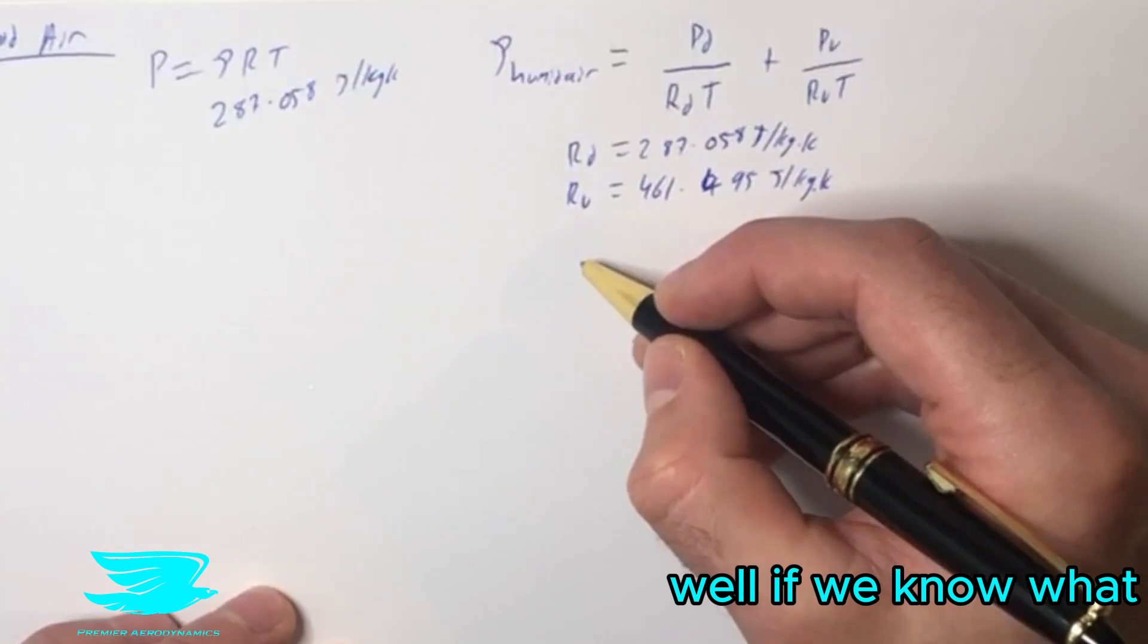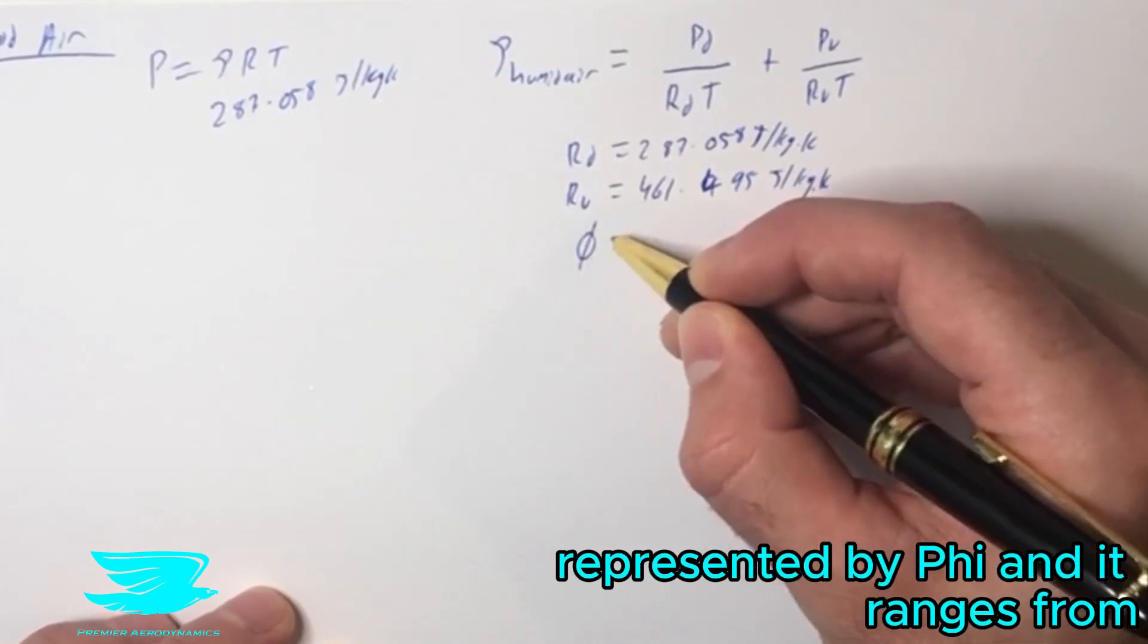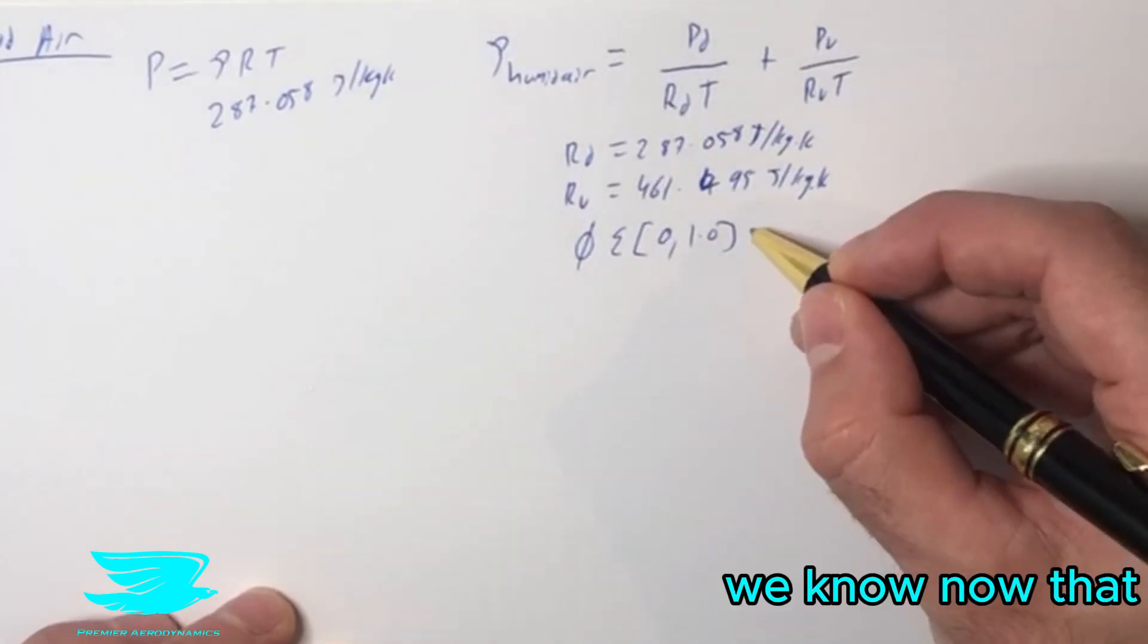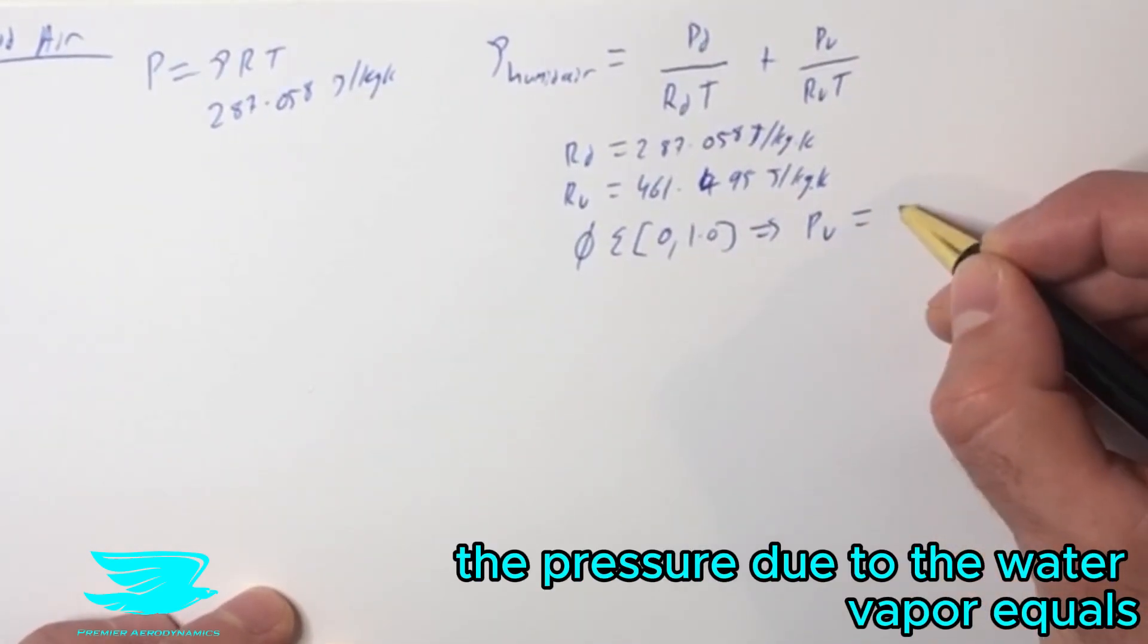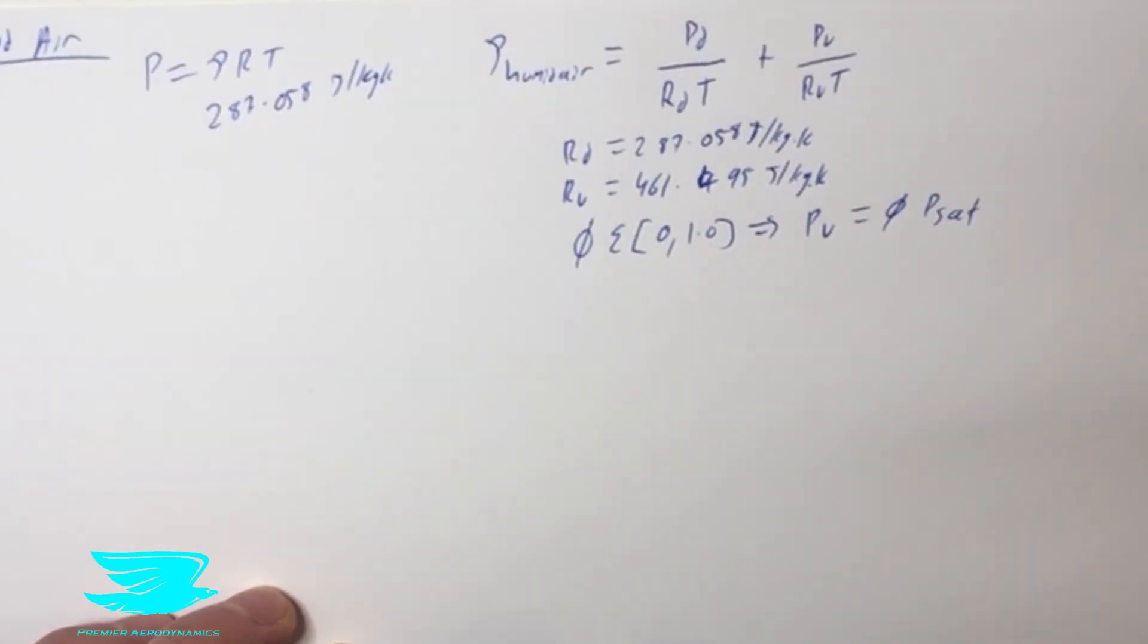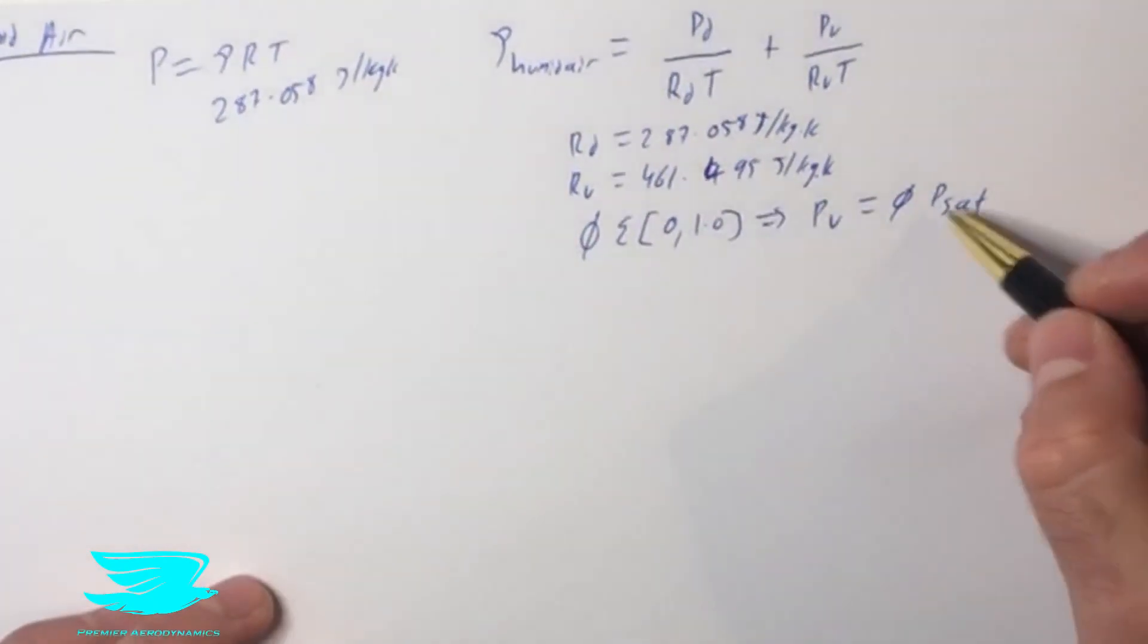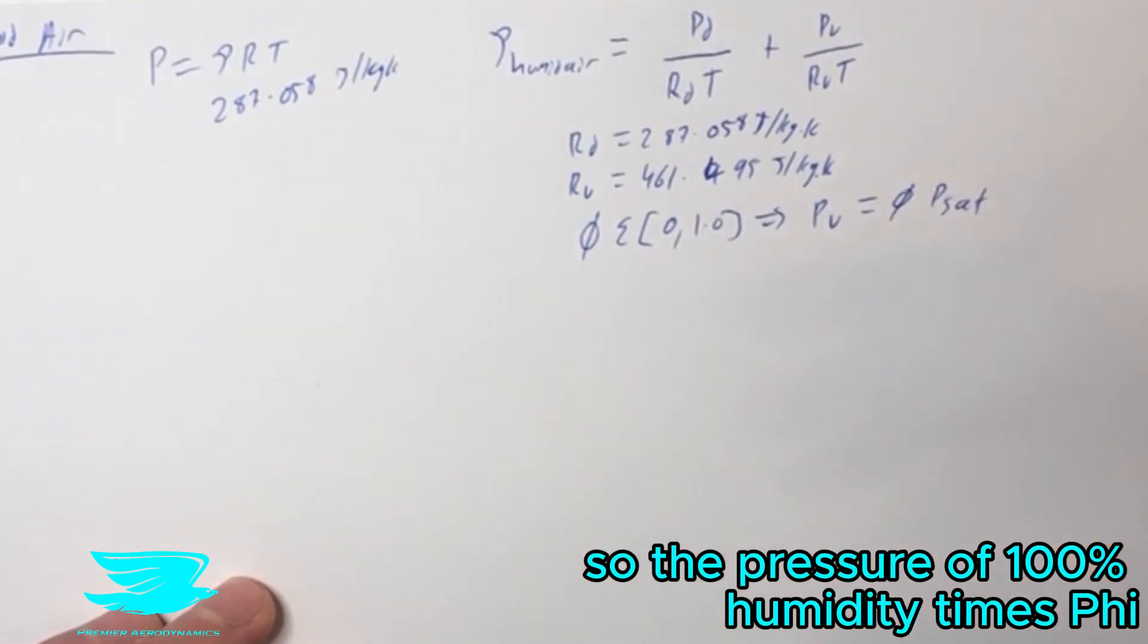If we know what the humidity is, represented by phi, this ranges from 0 to 1.0, where 1.0 is 100% humidity and 0 is 0% humidity. We know now that the pressure due to the water vapor equals phi times the saturation pressure if the humidity is 100%, not the one that we're measuring. So the pressure of 100% humidity times phi.